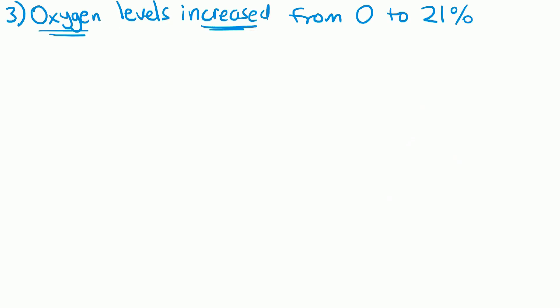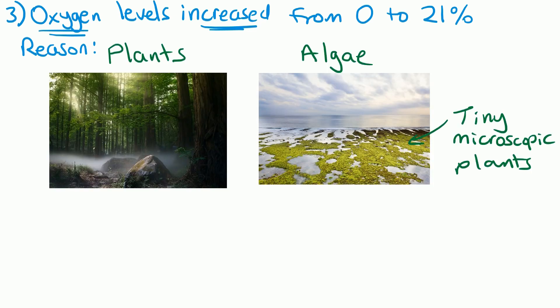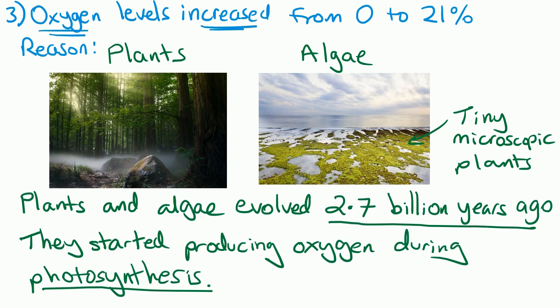Oxygen levels in the atmosphere have increased because in the early atmosphere there wasn't any, and now we have 21% oxygen in the air. The reason for this is due to plants and algae. Algae are tiny microscopic plants that live in water or in damp places, and plants and algae evolved around 2.7 billion years ago — that's a figure you have to remember for your exam.